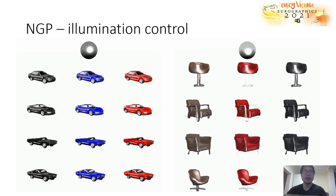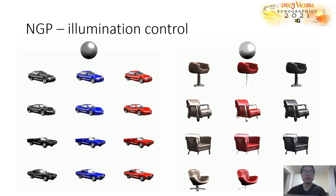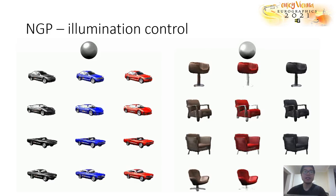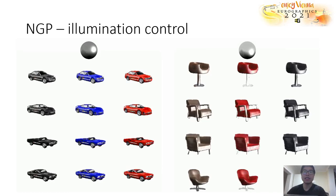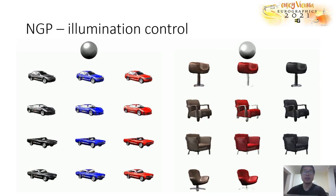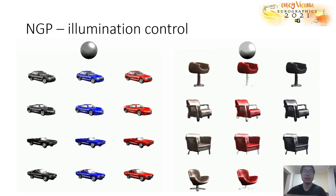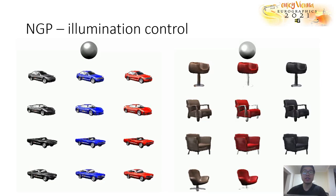Our method models detailed normal maps in the reflectance property maps generation stage, so that additional light can be added on top with explicit control of the illumination. We can control and specify the light settings, moving the lights, and also change the intensity.